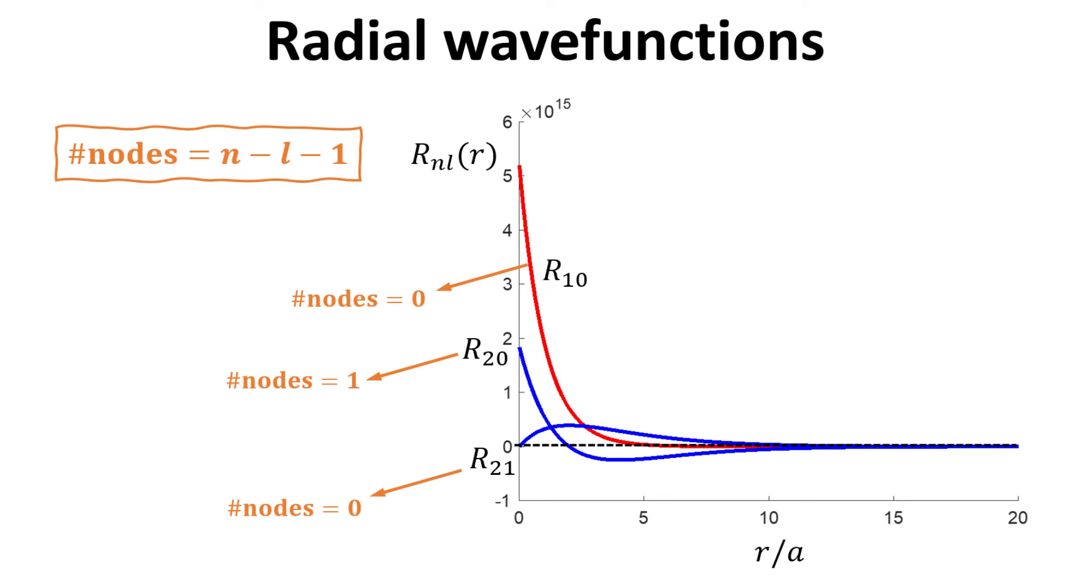In fact, there is a simple formula that tells us what the number of nodes should be, given by n minus L minus 1. The radial function R21, on the other hand, has 0 probability at r equals 0. Thus, we see that the electron is not always at the center of the proton, as what one would expect classically.